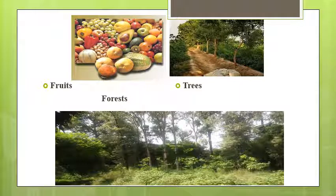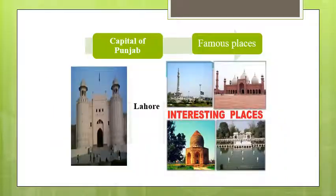Mangoes and oranges are also grown on a large scale. Shisham, eucalyptus, and popular trees commonly grow here. Changa Manga, a man-made forest, and Lal Sohanra Reserve Forest are also in Punjab. Punjab is also the most urbanized and industrialized province in Pakistan. The capital of Punjab is Lahore.